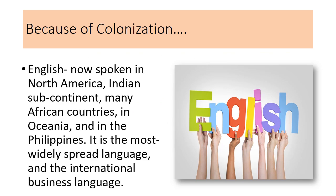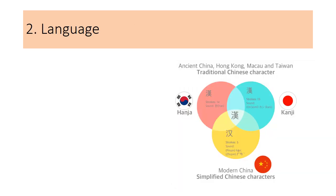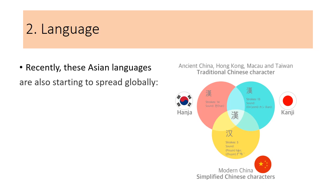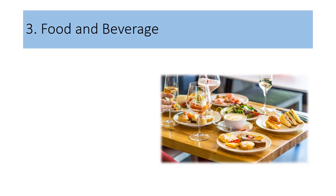While English is now spoken in North America, the Indian subcontinent, many African countries, in Oceania, and in the Philippines — it is the most widely spread language and the international business language. While recently, there are three Asian languages which are starting to spread globally: the Japanese language, Mandarin, and the Korean language.